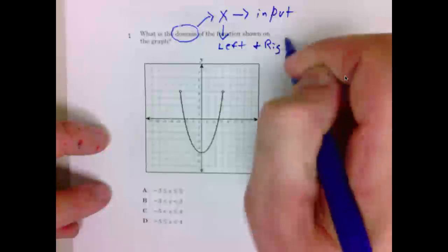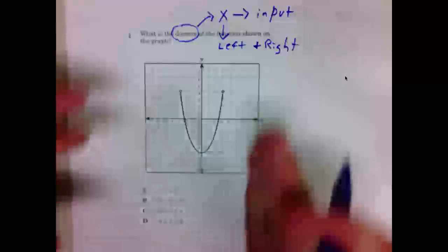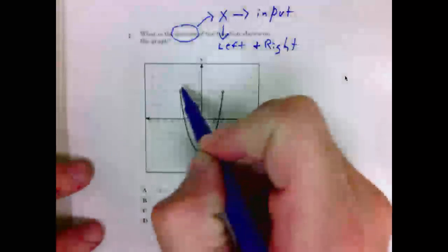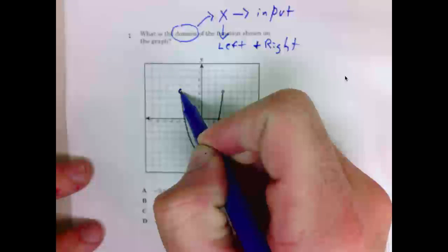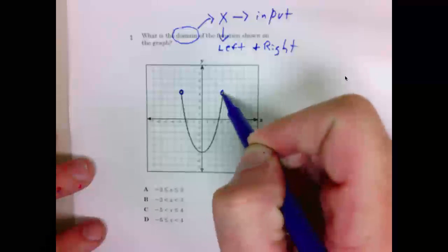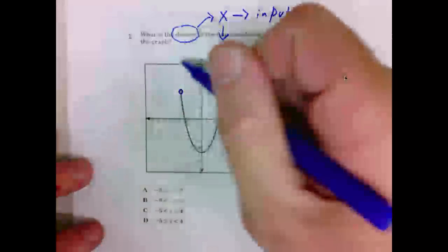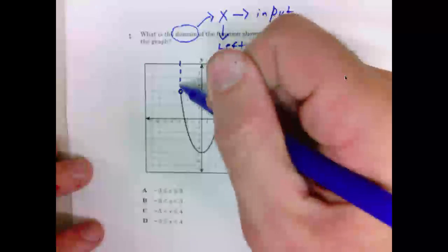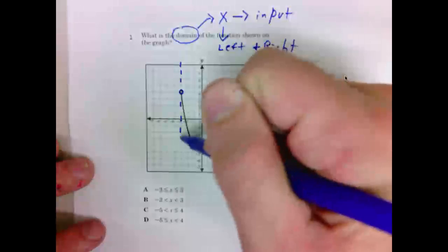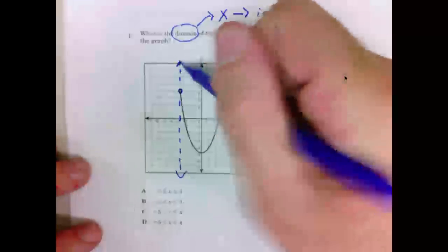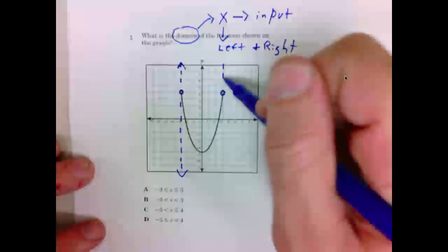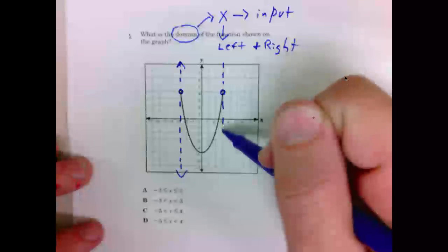Left and right. So one way to find the domain is to bound the graph on the left and right side. Hopefully you see that we have an empty point here and an empty point here. I'm going to draw a vertical line through both of these values. I'm drawing it dashed because the circle is empty. And I'm drawing it dashed over here.